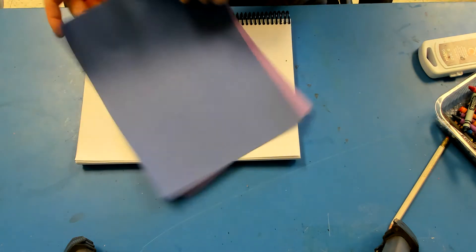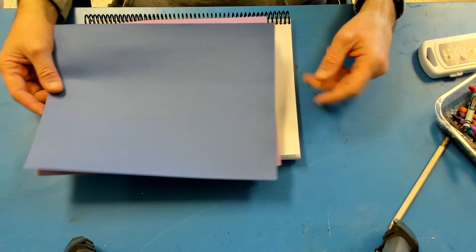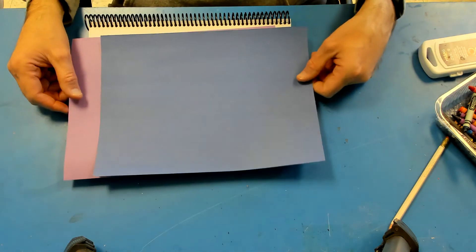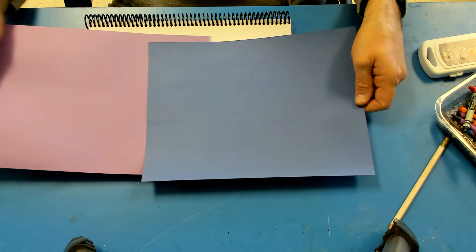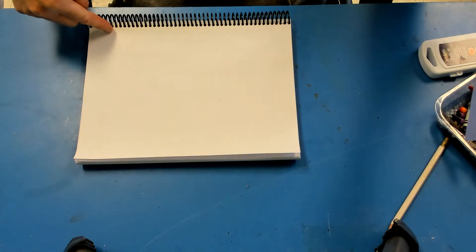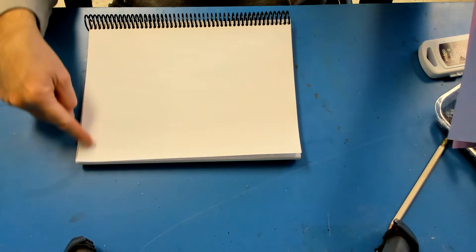All right, welcome back. This is part two of our fish tank. Today we're going to make our fish, and we're going to start by taking two sheets of colorful paper and we're going to glue them down in stripes in our sketchbook.